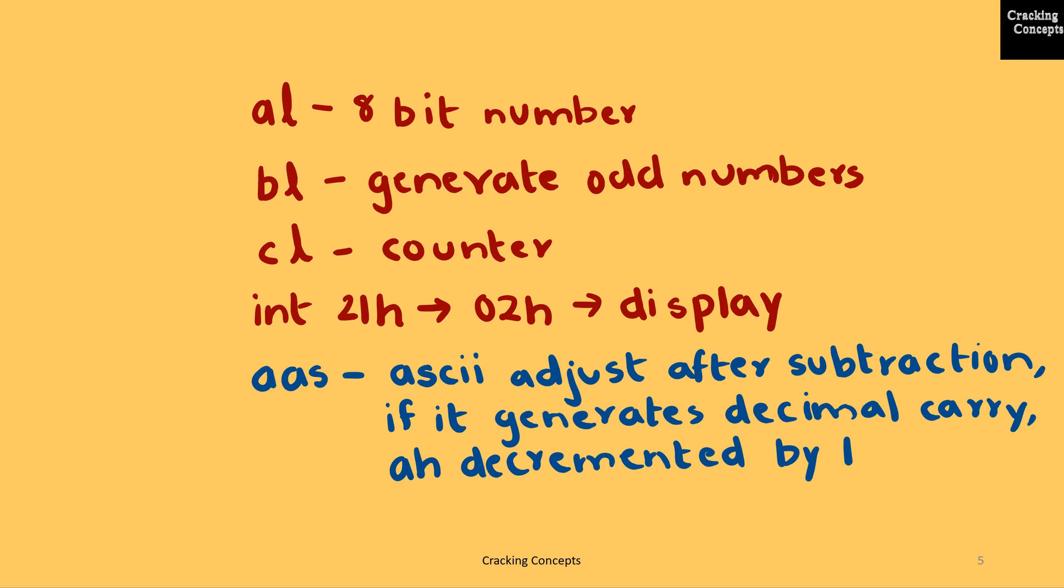I'll also use the 21h interrupt in order to display the result of this program. I'll use an instruction called ASCII adjust after addition. After the subtraction operation is done, if it generates a decimal carry, then the register AH is decremented by 1.